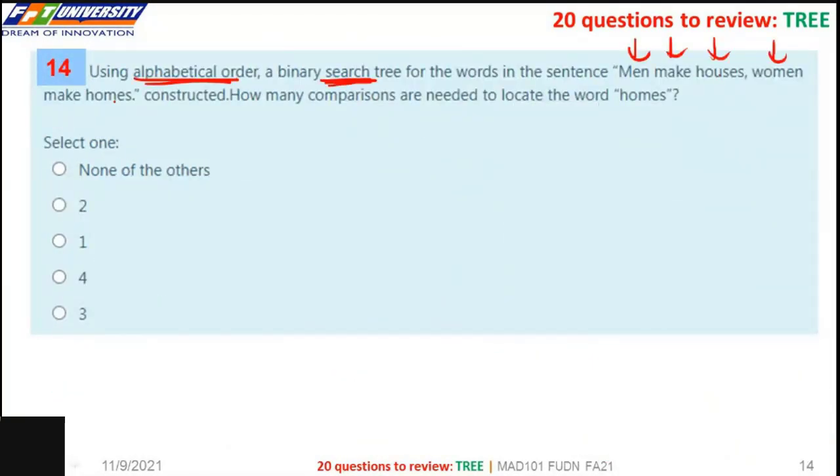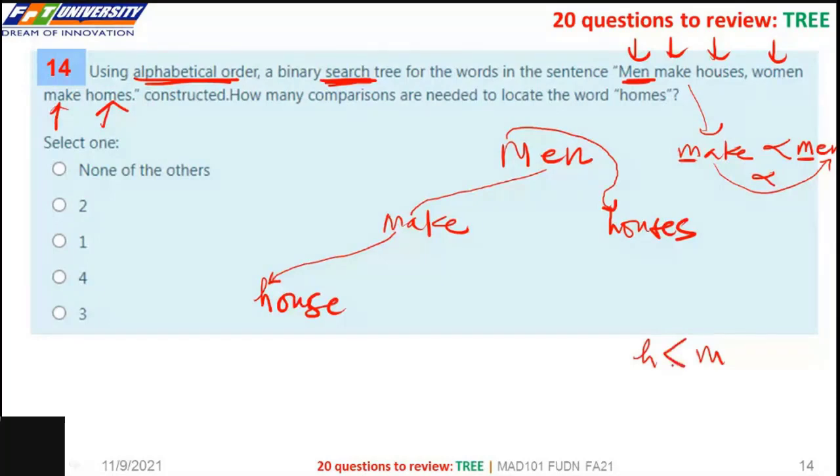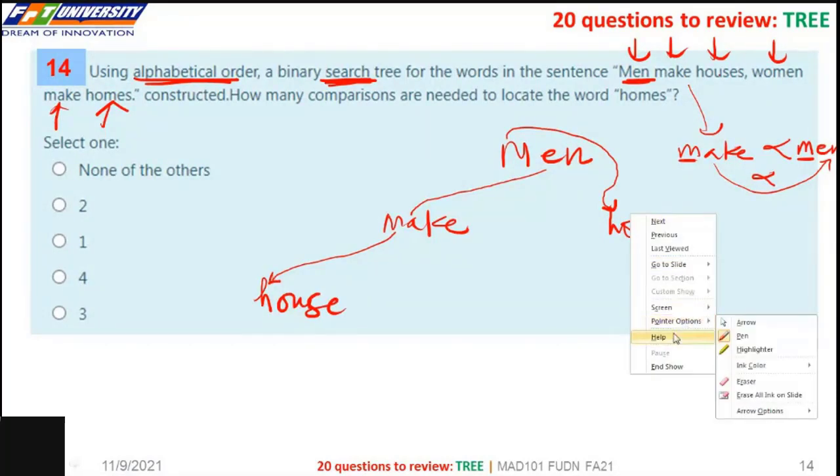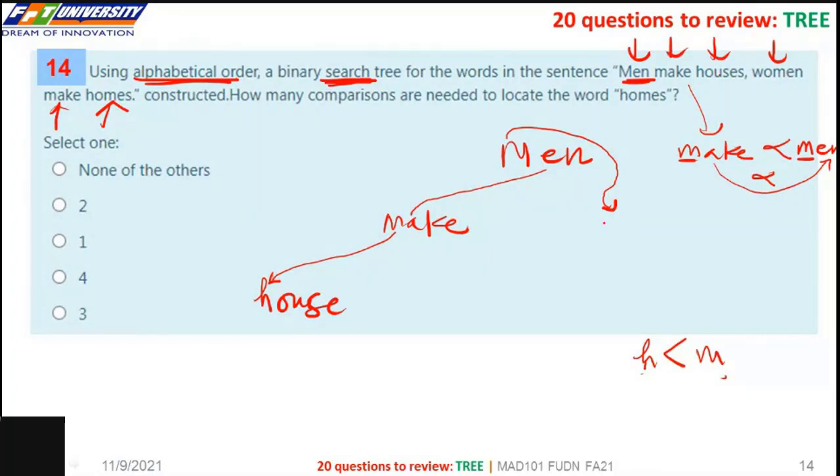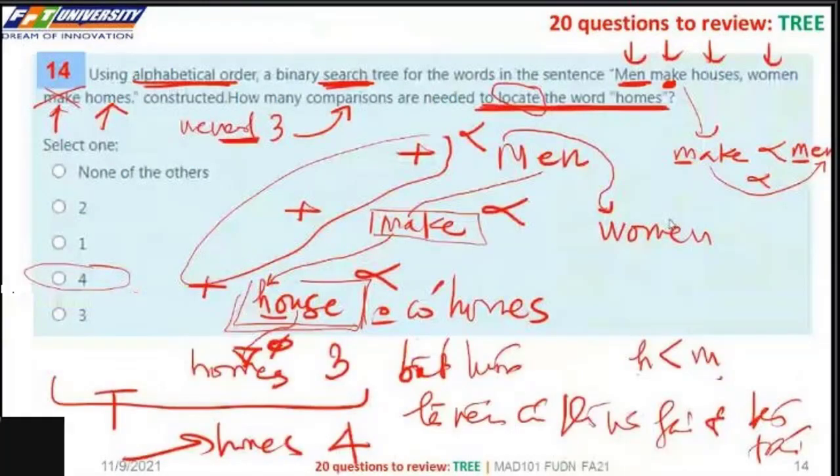So here, make. Because here, H is smaller. So here, house here. H smaller than, sorry. Women here, make. So make here. Because U is the add. So how many comparison to locate the word? So one comparison, two comparison, three comparison.